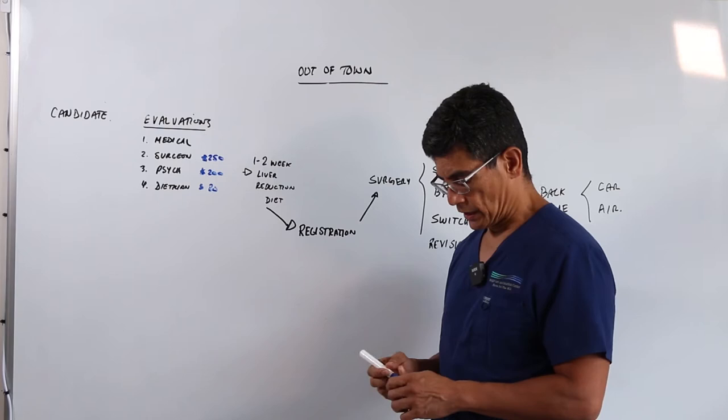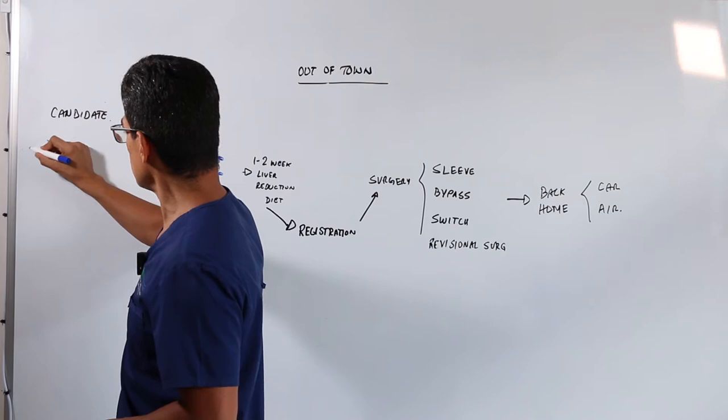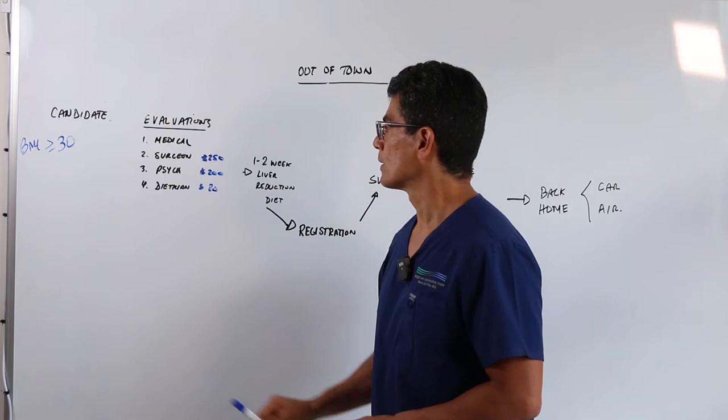So how does it work? Well, first of all, we need to determine if you're a candidate for weight loss surgery. Your BMI has to be 30 or higher. That's the number one thing.